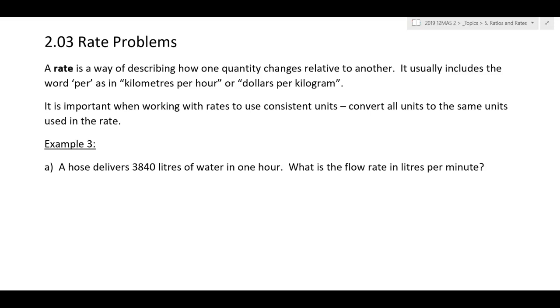Rates just about always have the word 'per', and per pretty much means divided by. That's how we're going to solve these. If I want to work out a rate in dollars per kilogram, I work out the number of dollars and divide it by the number of kilograms. Dollars per kilogram means this many dollars divided by this many kilos will give us the rate.